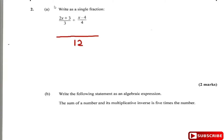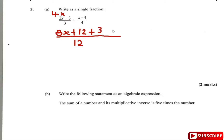3 into 12 goes 4 times, so this becomes 4 times (2x+3): 4 times 2 is 8x, and 4 times 3 is 12, giving us 8x+12. Then 4 into 12 goes 3 times, so it becomes plus 3(x-4), which is 3x minus 12.